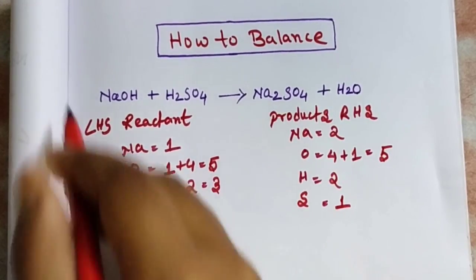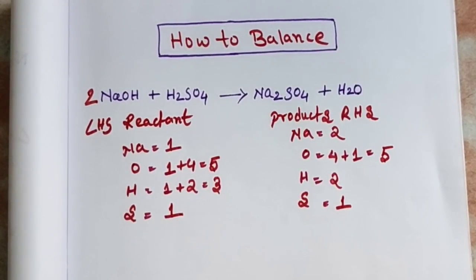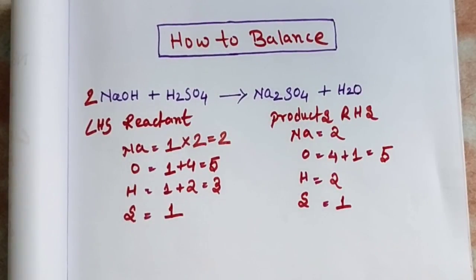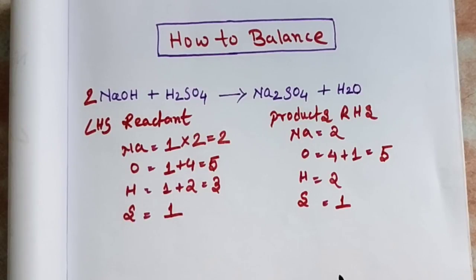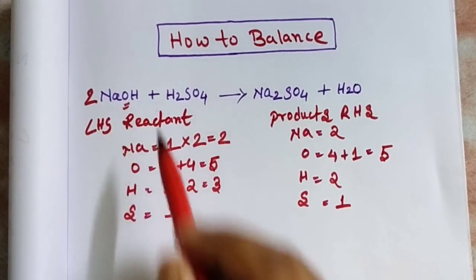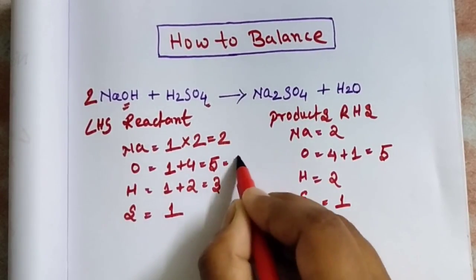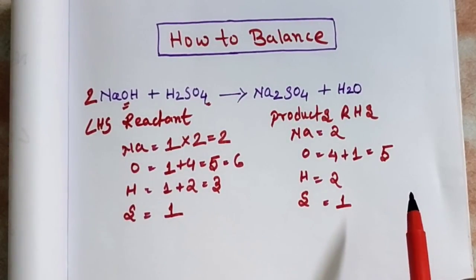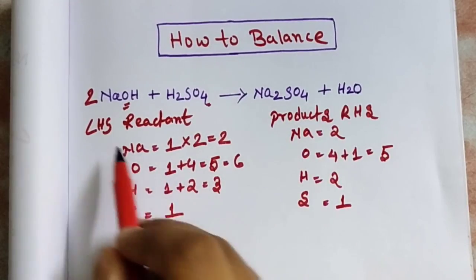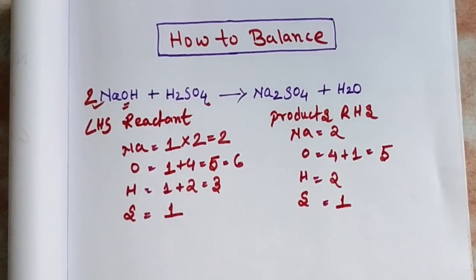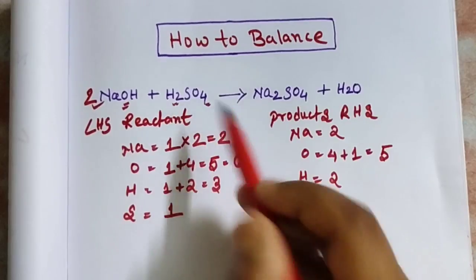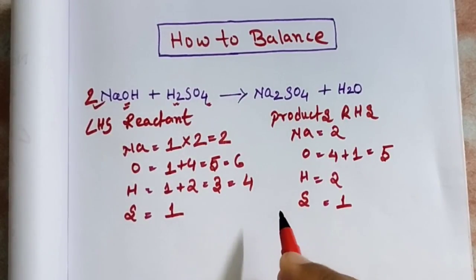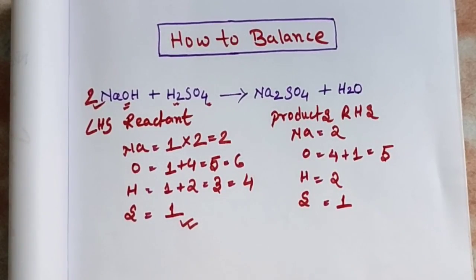First, take sodium. If I put two here, one times two gives me two sodium. Now I need to update oxygen: oxygen is two plus four so total oxygen became six. I also need to update hydrogen: hydrogen is two plus two, so total hydrogen became four. Sulfur is already balanced.